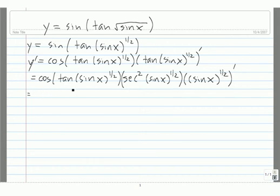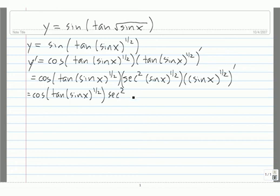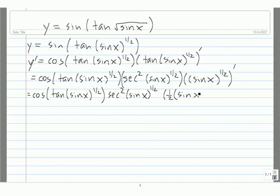Everything else remains the same. So now for this last derivative, our outside function is x to the 1 half. So we bring down the 1 half, keep the inside, subtract 1 from the power, and multiply by the derivative of the inside.